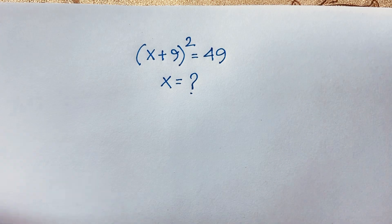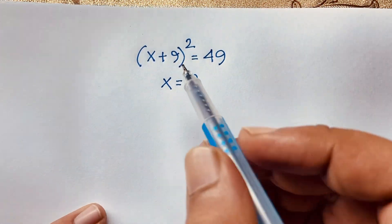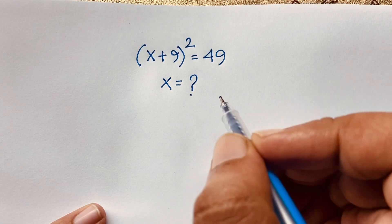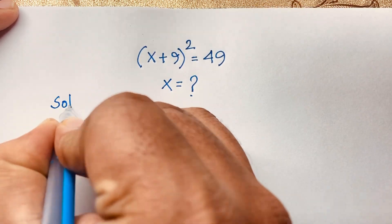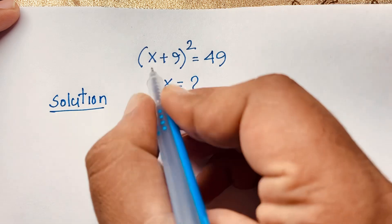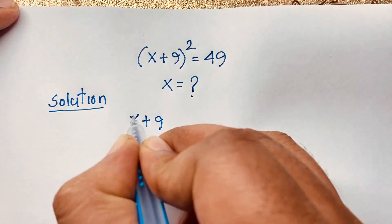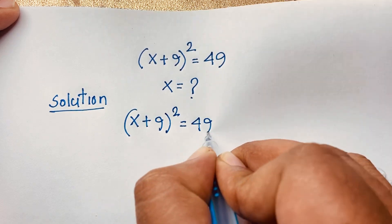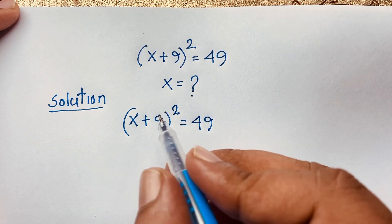Hello everyone. How to solve this easy algebraic expression? This question is: x plus 9, whole to the power 2, is equal to 49. How to solve this question? Solution: x plus 9, whole to the power 2, is equal to 49. We'll find out the value of x in this math problem.